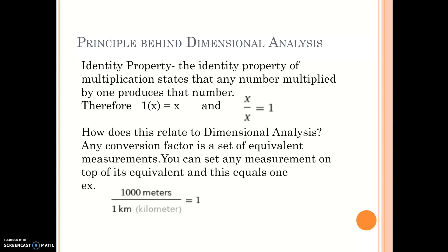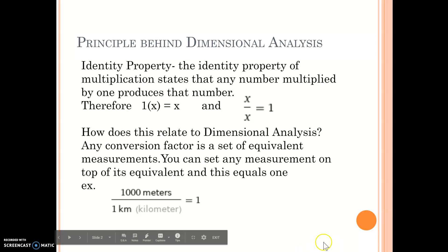Any conversion factor is a set of equivalent measurements. Therefore, if you place an equivalent measurement and divide it by another equivalent measurement to that first measurement, you will have 1. This is why the quantity never changes.